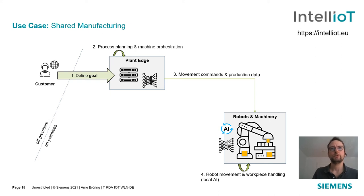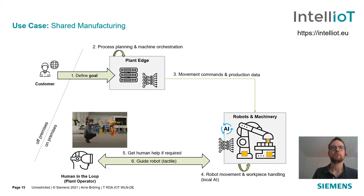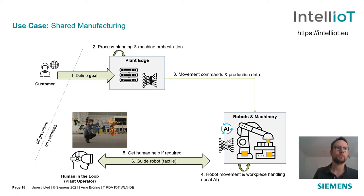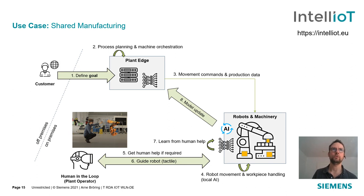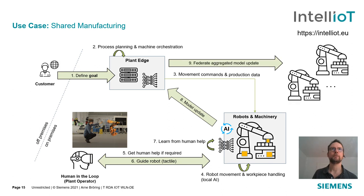The robot is controlled through an AI, and workpiece handling is also done through the AI. The use case assumes that in some situations the AI cannot tell the robot what to do — it reaches its limits — and in that case a human in the loop, such as the plant operator, takes over using augmented reality to guide the robot. From this guidance, a retraining of the local AI model is triggered, integrating the human's knowledge into the AI. We then implement the federated learning approach to send the model update to the edge where the aggregated AI model is maintained and federated out to all production cells with similar setups.